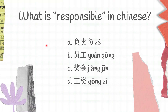The first question: what is 'responsible' in Chinese? We have a, wu zhe; b, yuang gung; c, yang jin; d, gong zhi. Is it a, b, c, or d?